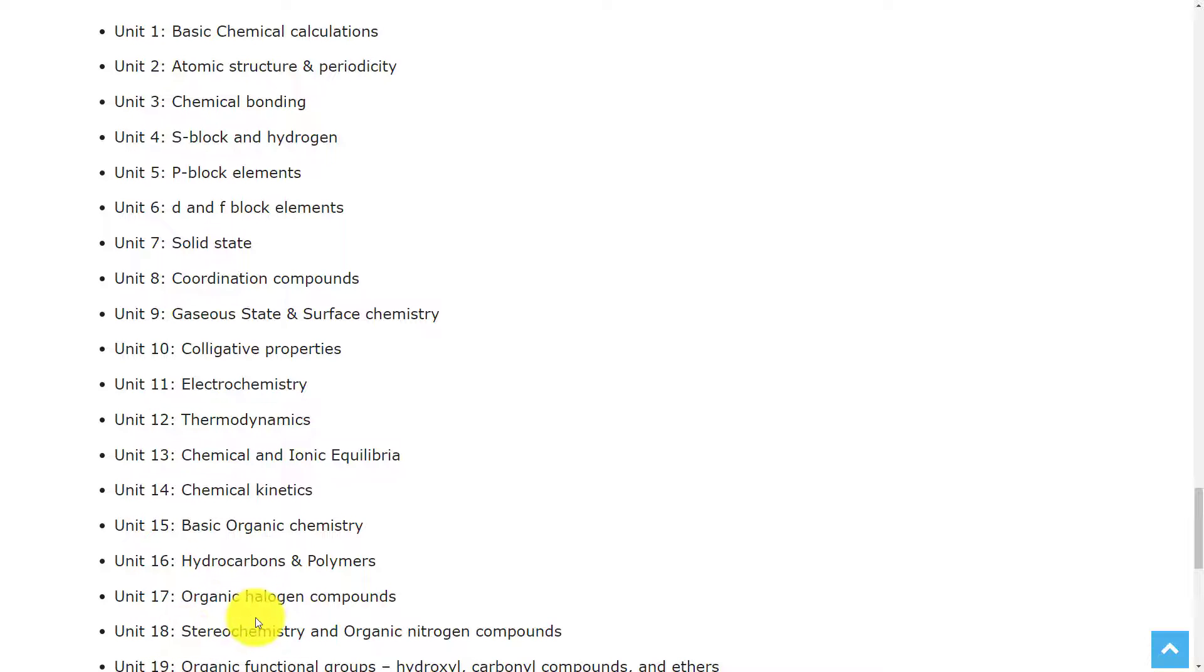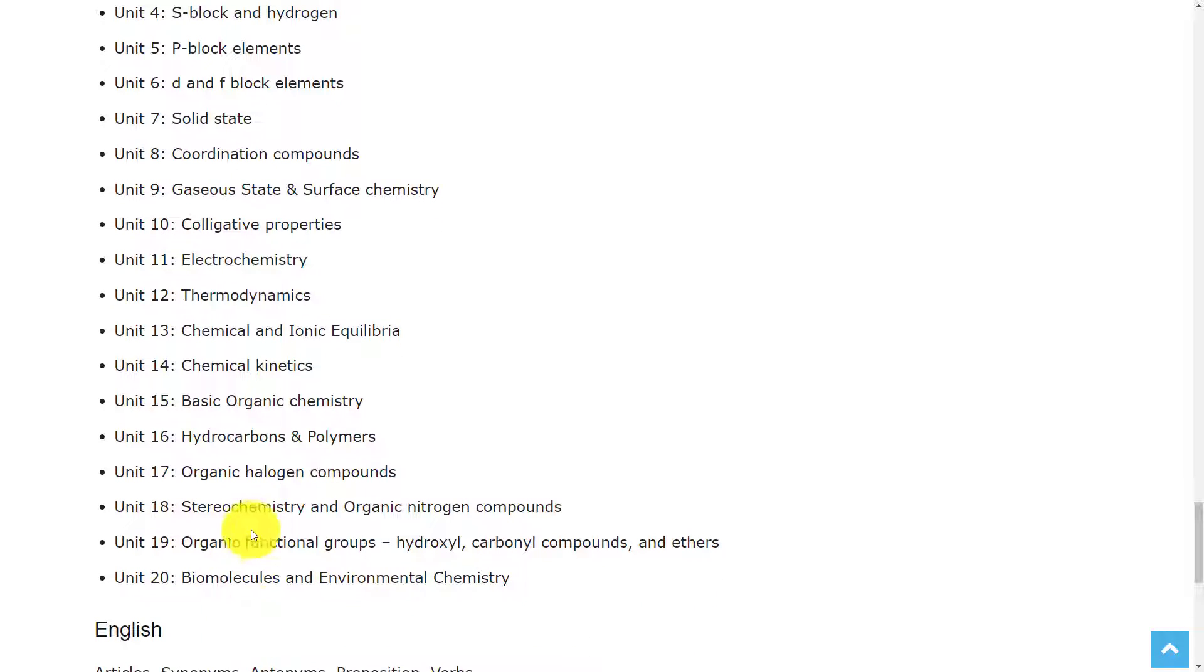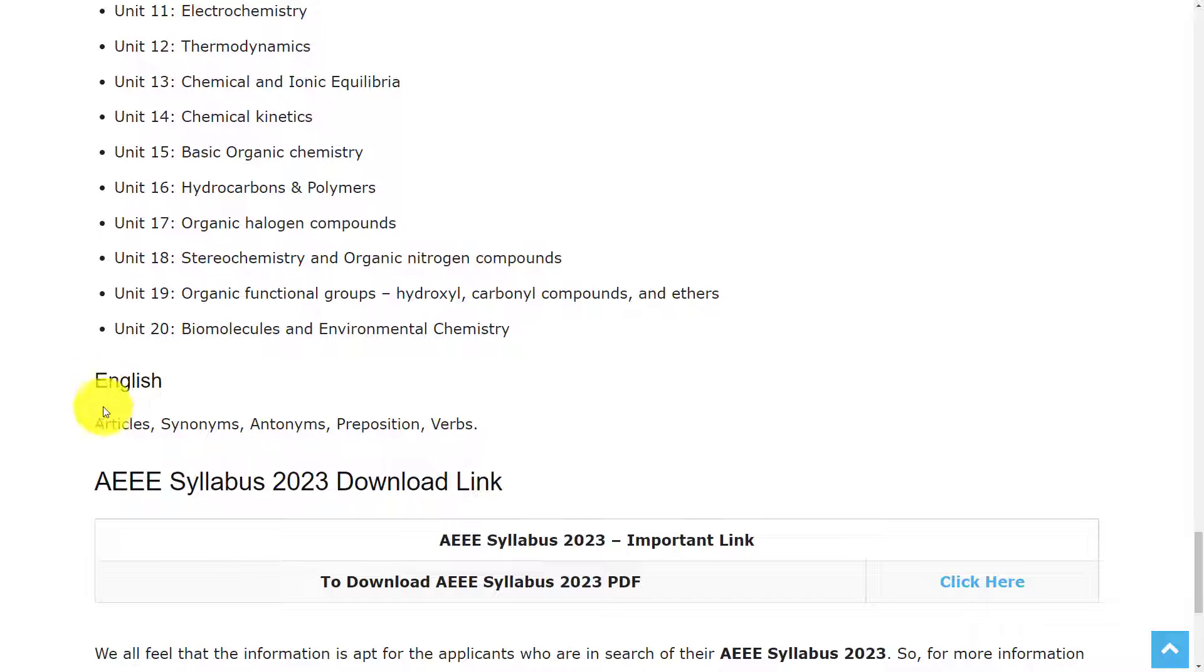Organic Halogen Compounds, Stereochemistry and Organic Nitrogen Compounds, Organic Functional Groups, Biomolecules, and Environmental Chemistry. The last section is English, and in that: Articles, Synonyms, Antonyms, Prepositions, and Verbs.